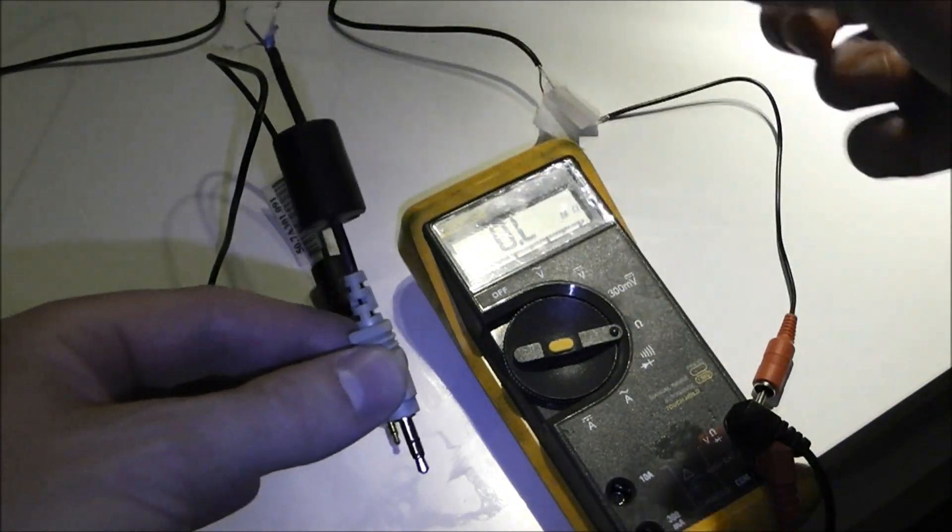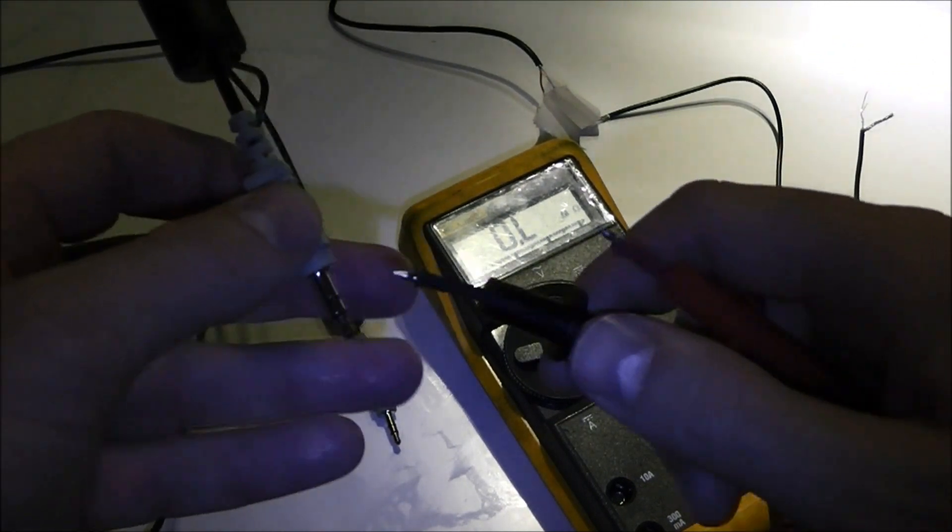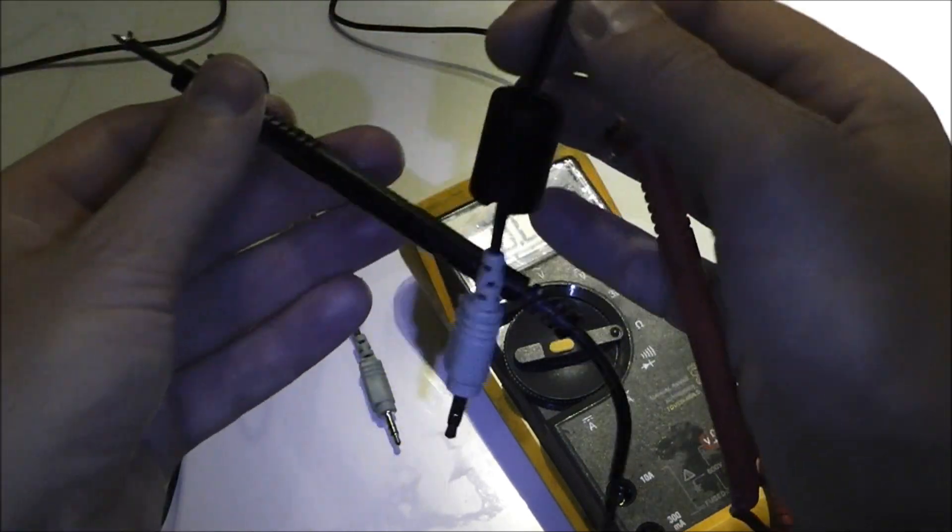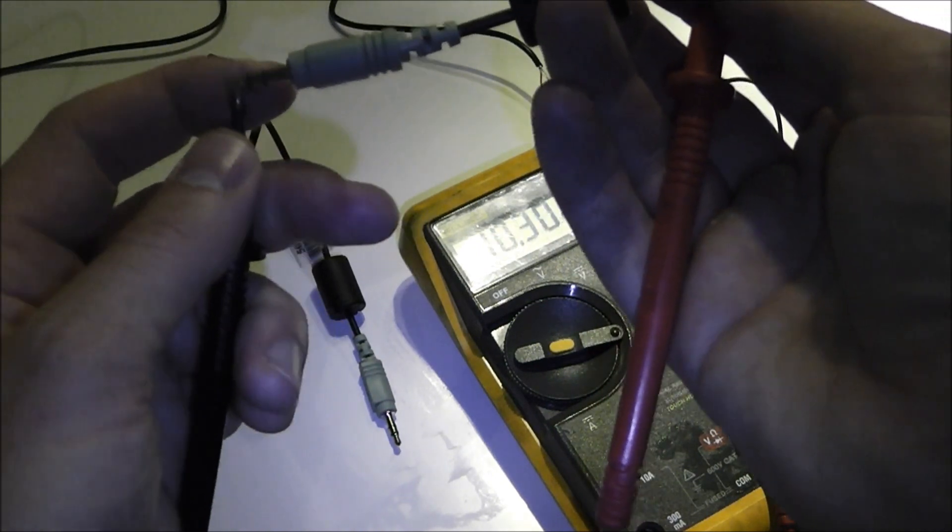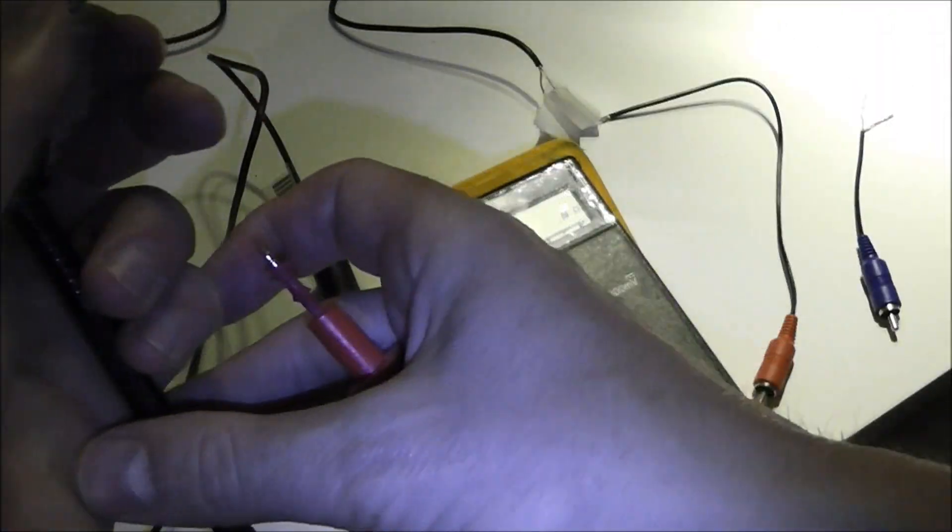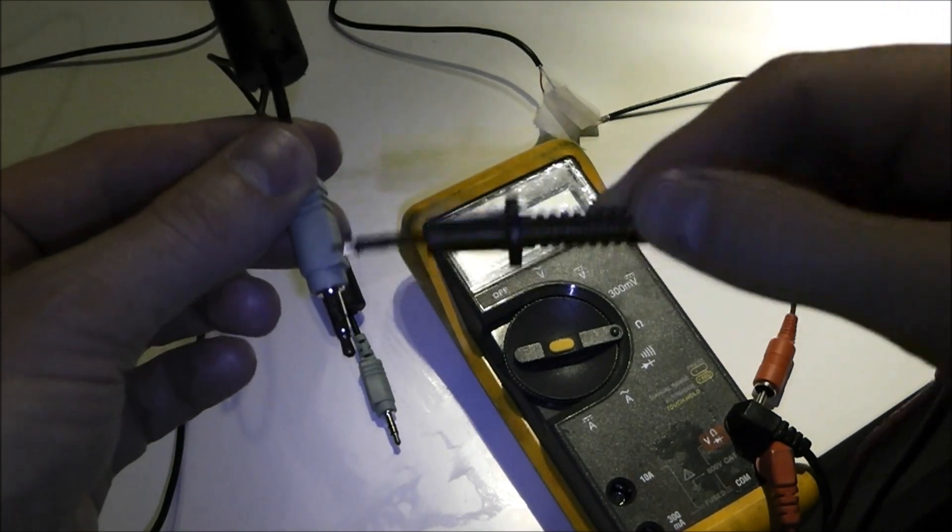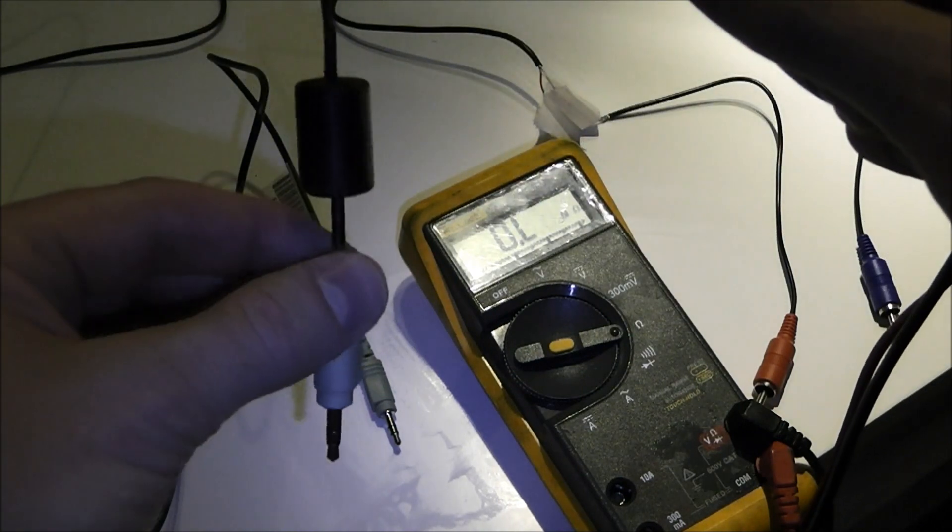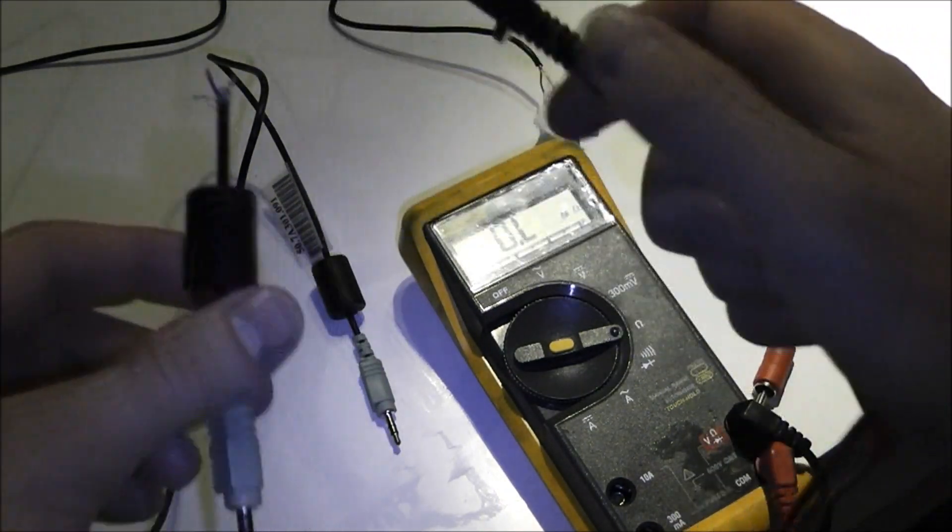Let me remind myself by checking again. The shielding is connected here, one of my red wires is connected to the middle, and then I have a white cable that was connected to the tip.